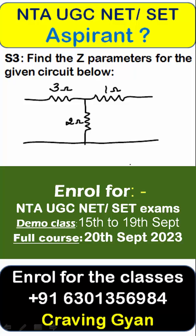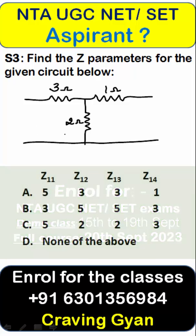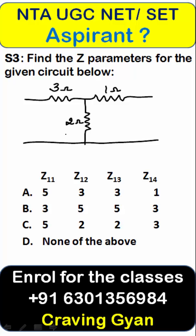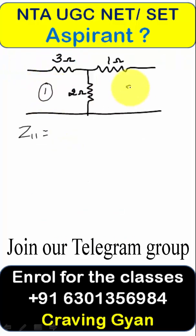In this question, what they are asking is to find the Z parameters of the given network. The Z parameters are also called open circuit parameters or impedance parameters. Let me take this port as port one and this one as port two.